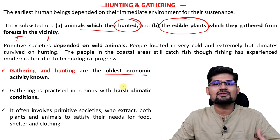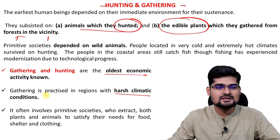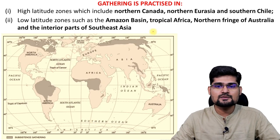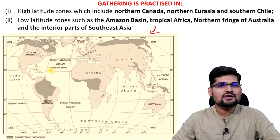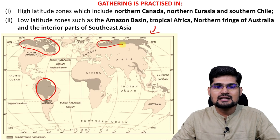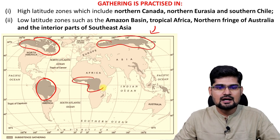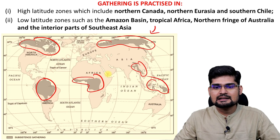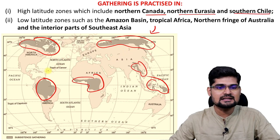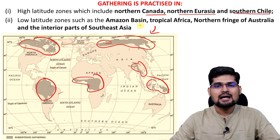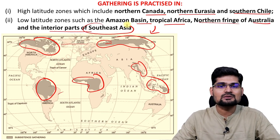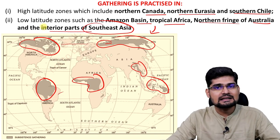Normally in different conditions — in forested areas, in harsh climatic conditions — these were practiced. Gathering is still practiced in many societies. You can pause the video and mark on the world map the areas where hunting and gathering is still prevalent: majorly northern Canada, northern Eurasia, southern Chile, Amazon Basin, tropical Africa, northern fringe of Australia and interior parts of Southeast Asia.